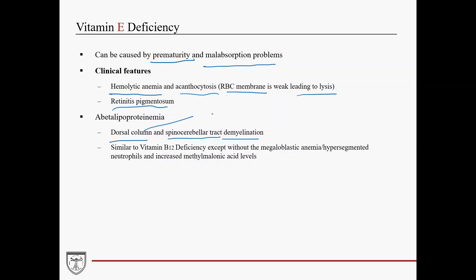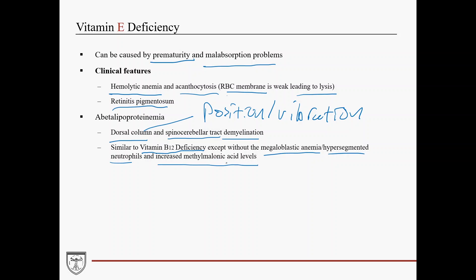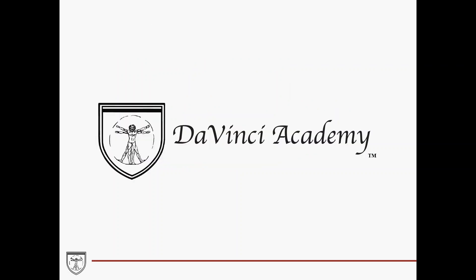In patients with abetalipoproteinemia, you also see dorsal column and spinocerebellar tract demyelination, because vitamin E plays a crucial role in nerve function. The dorsal columns are responsible for position and vibration sense (proprioception). This is similar to vitamin B12 deficiency, which also causes dorsal column demyelination with loss of position and vibration sense. However, vitamin B12 deficiency additionally presents with megaloblastic anemia, hypersegmented neutrophils, and increased methylmalonic acid — findings absent in vitamin E deficiency. That closes out our discussion of fat-soluble vitamins; the next lecture covers water-soluble vitamins.